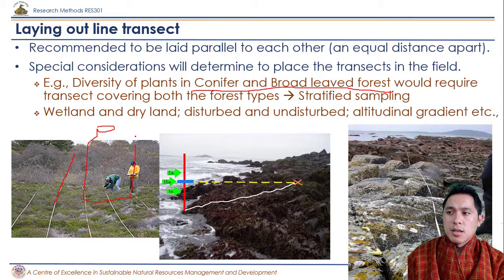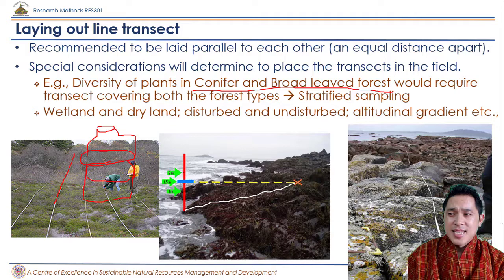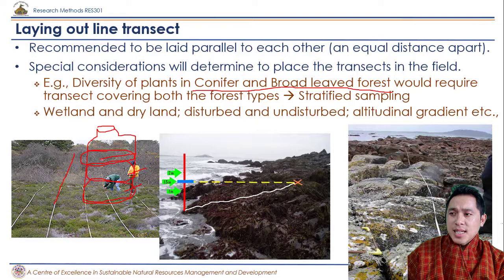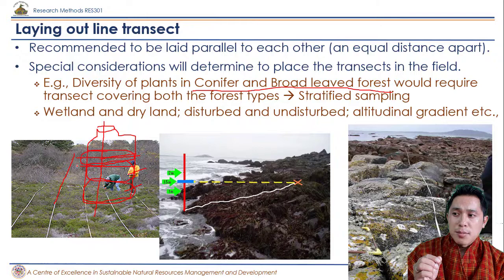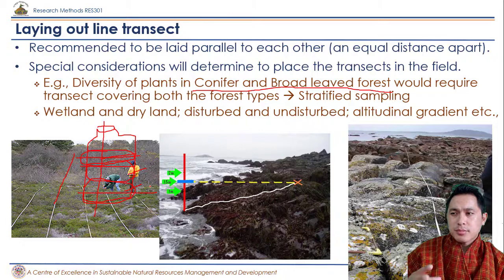Here is an analogy: imagine a jar with three layers of candies — red, brown, and white. If you want to see the diversity of all three candy types using a transect, it is logical to lay the transect longitudinally through all three layers so you encounter all of them. But if you lay the transect parallel to the layers, one transect shows only red, another only brown, and another only white. So it is logical to lay the transect in a longitudinal fashion to capture all diversity.